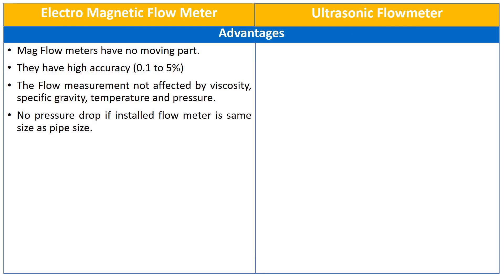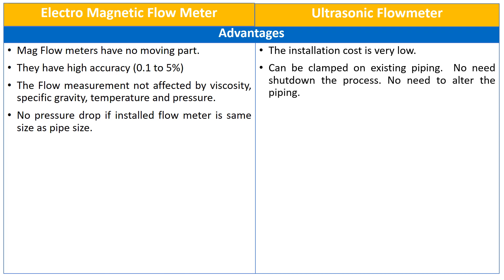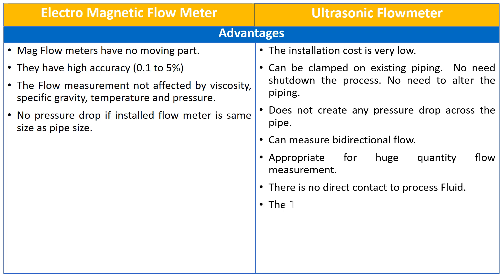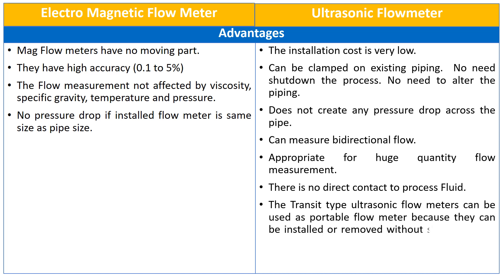Let us see some advantages of ultrasonic flow meters. The installation cost of these flow meters is very low. They can be clamped on existing piping with no need to shut down the process or alter the piping. They do not create any pressure drop across the pipe, and they can measure bidirectional flow. Ultrasonic flow meters are very appropriate for huge quantity flow measurement. There is no direct contact with the process fluid. The transit type ultrasonic flow meters can be used as portable flow meters because they can be installed or removed without shutting down the process.